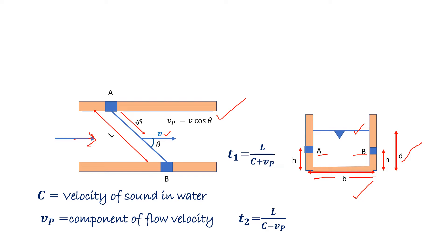These transducers A and B are installed in such a way that the line joining these two transducers is making an angle theta with the horizontal. L is the length of this path.